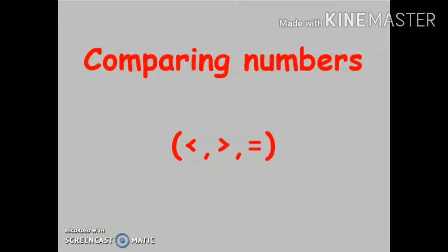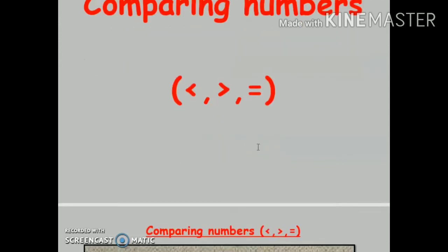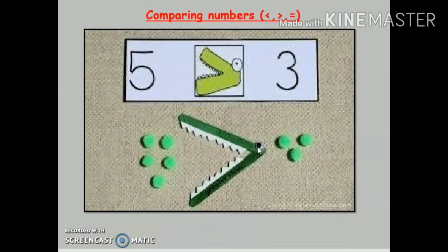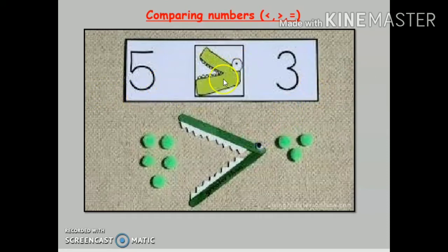Hi everyone, today we are going to discuss comparing numbers — that is less than, greater than, and is equal to. We are going to do numbers up to 999. As we have already learned in junior classes, the alligator is fond of eating big numbers. So if we are given numbers 5 and 3, the alligator will eat 5 instead of 3.